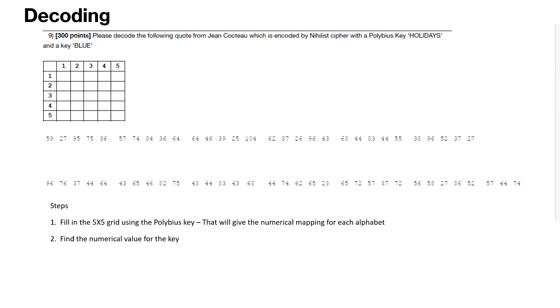Once we have that grid filled in, we will be able to find the numerical value for the key. Right here, the key is blue. We will be able to find the numerical value for the key. Once we do that, we will put the corresponding key value against each of these encoded numbers.